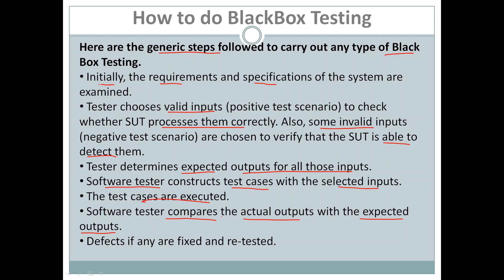If the actual output and expected output are the same, it means the test is successful or the test has passed. Otherwise, if they are not the same, there is some problem in the code that needs to be fixed and retested. Any defects found are fixed and the system under test is retested. This is how black box testing is carried out.